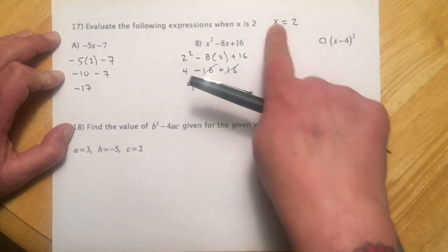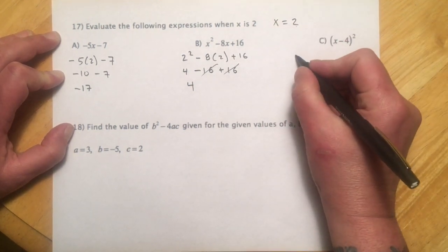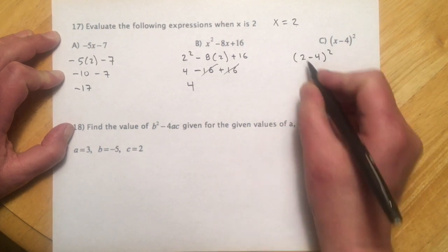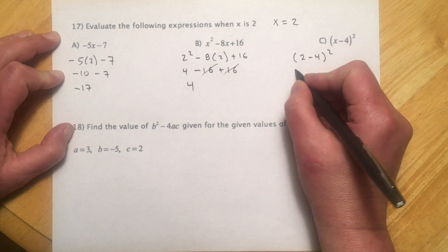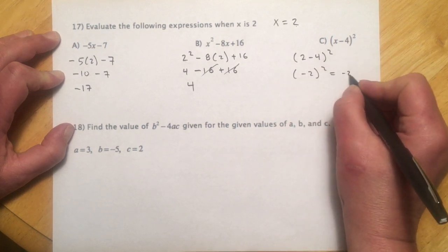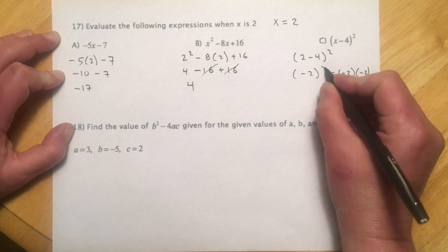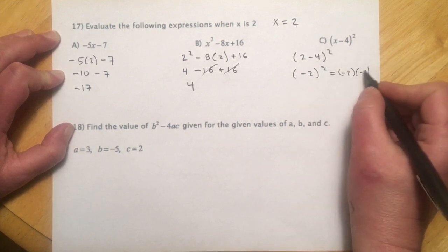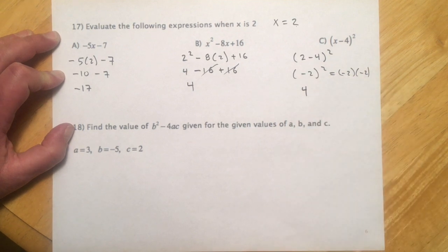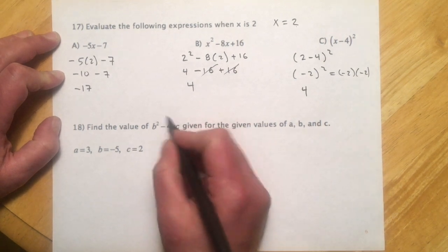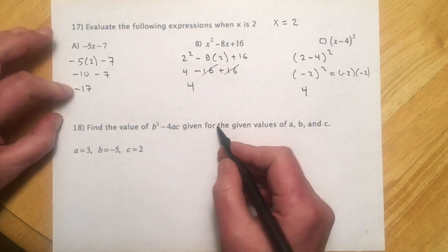And then this last one over here, x equals 2. I'll scoot it this way. So 2 minus 4 quantity squared. 2 minus 4 is negative 2 squared. And remember, this is negative 2 times negative 2. That's what that squared means. Just multiply it that many times. So we've got a pair of negatives. And that's going to flip that to a positive 4.